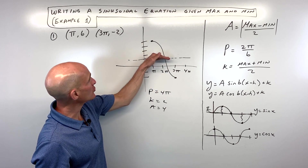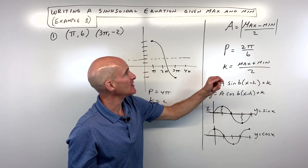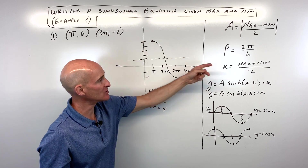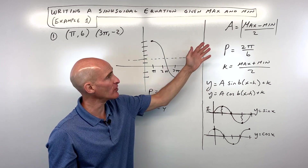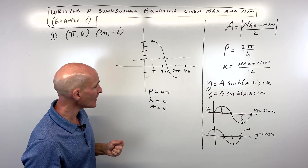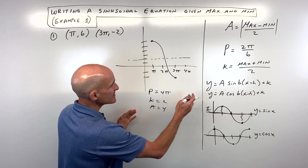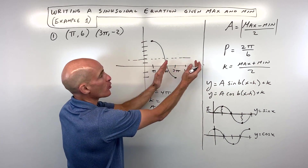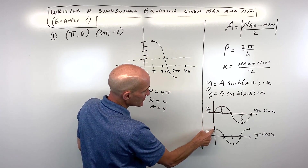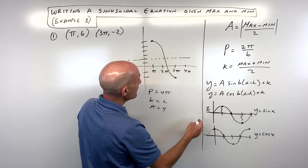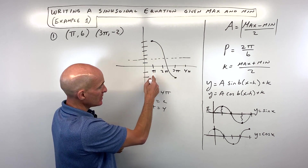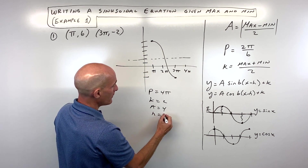For the k value, the vertical shift, you add the max and the min divided by 2: (6 plus negative 2) divided by 2 is 4 divided by 2, which is 2. So you can see we're getting the same thing. Use the formulas or the graphing way, whichever you prefer. Now the only other thing we need to figure out is the h value, which is related to the horizontal shift, the phase shift. For cosine, you can see how it starts at the maximum right on the y-axis — but this one has been shifted to the right by pi. So our h value equals pi.